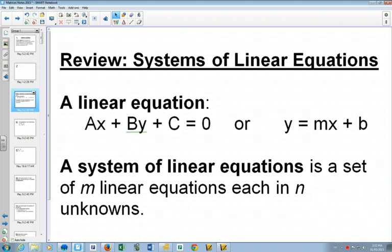y equals mx plus b. A system of linear equations is when you have m equations with n things that you don't know. Usually, we've had two equations with two unknowns. But you could have, in three-dimensional space, three equations with three unknowns. And we could keep going.